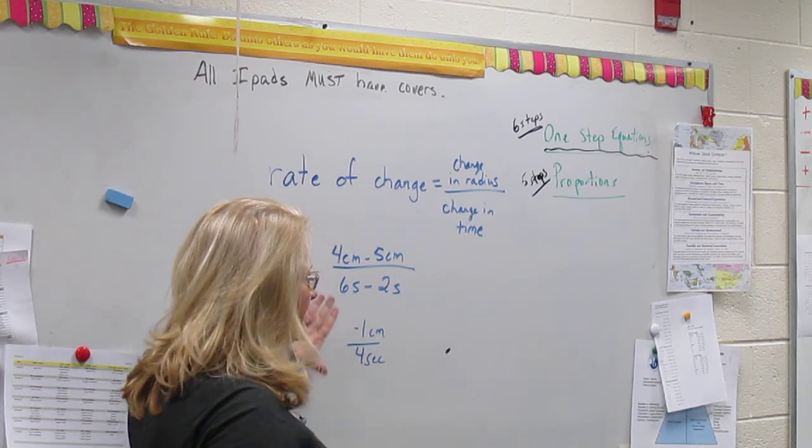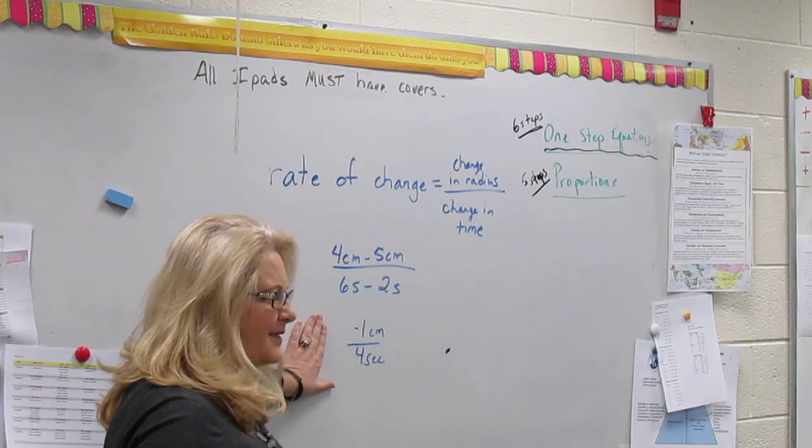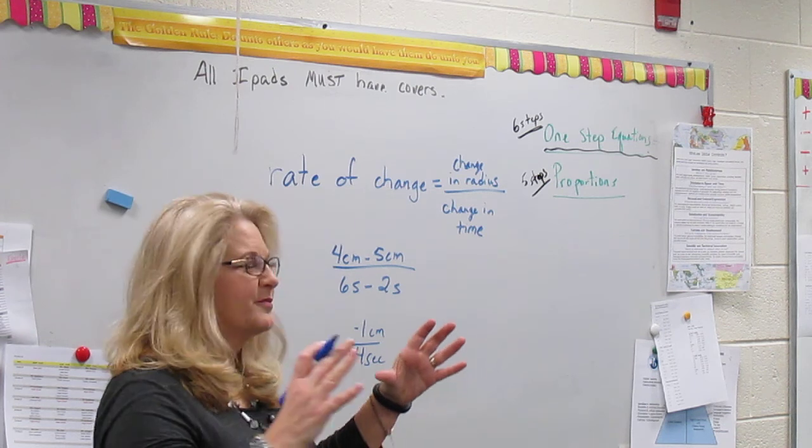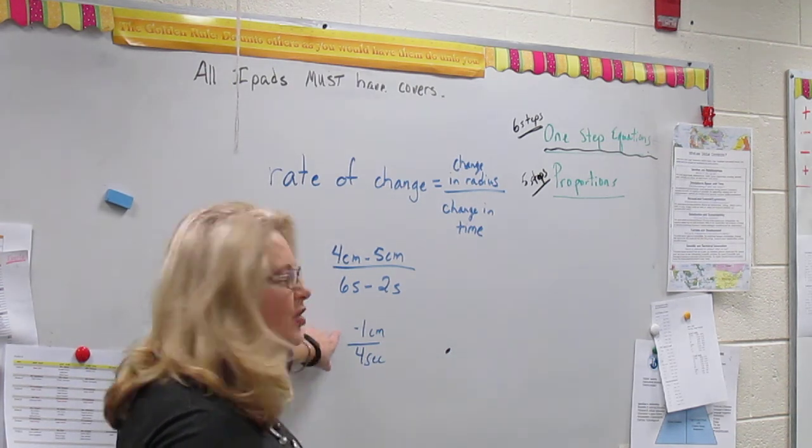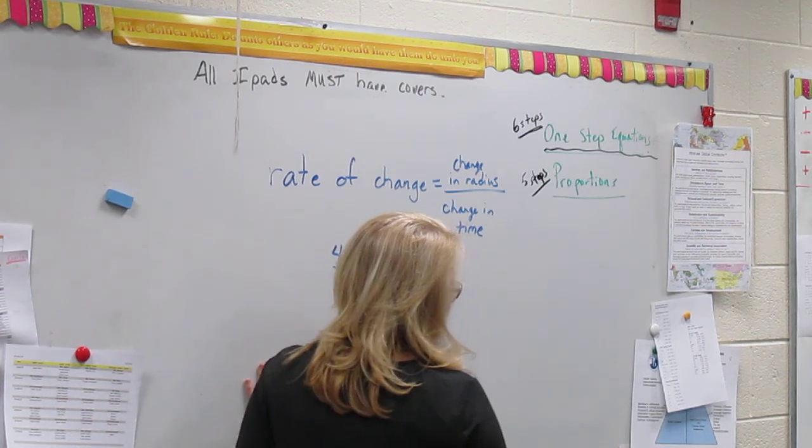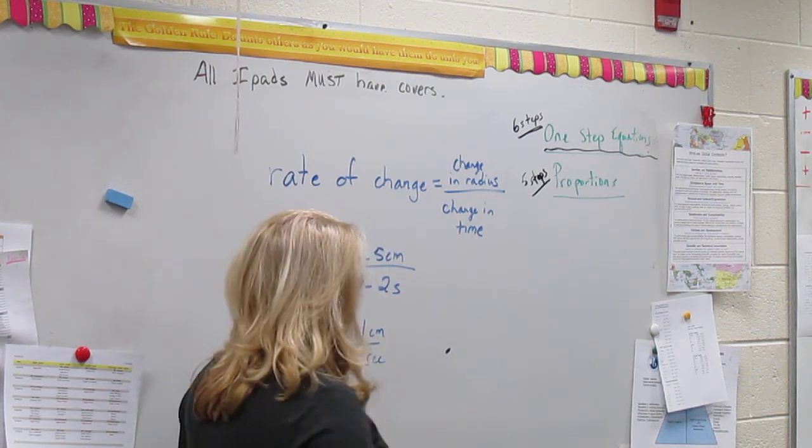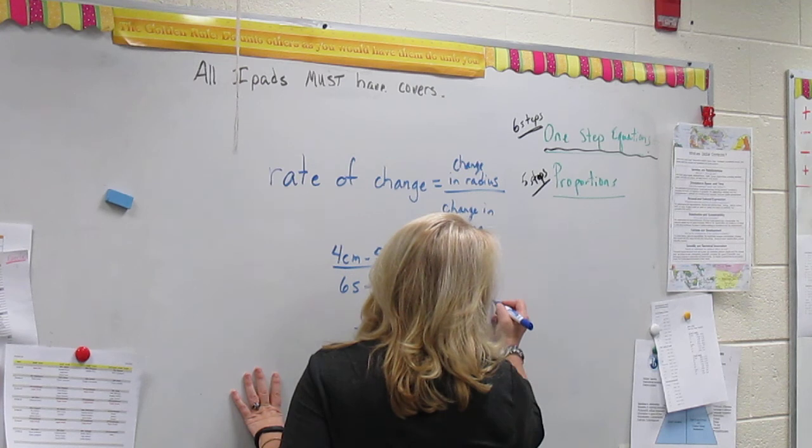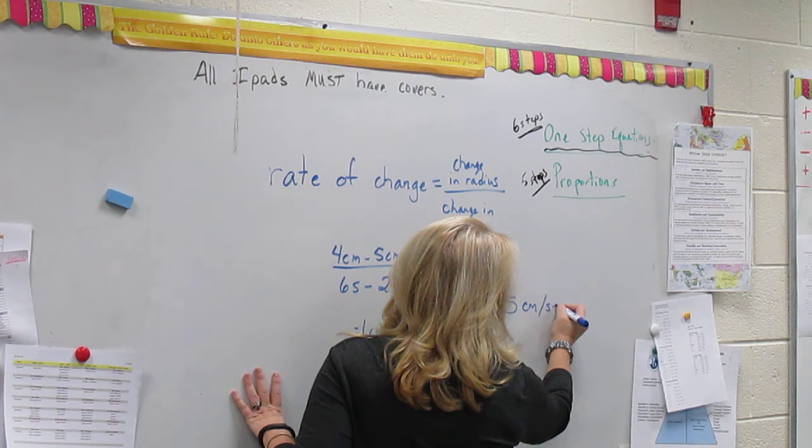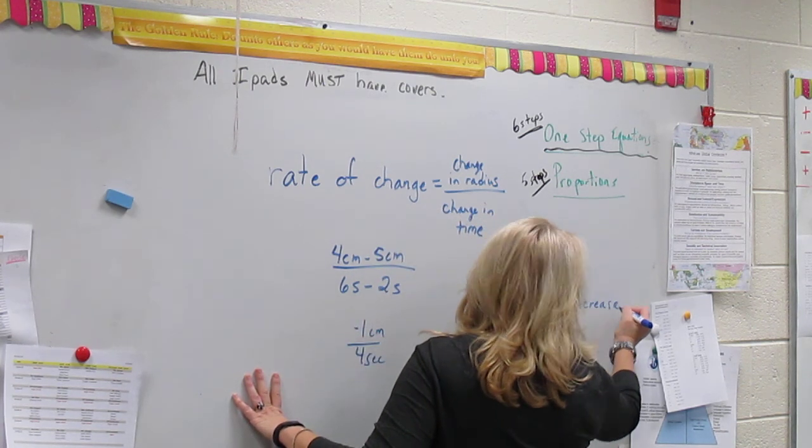So how much change in distance, or in diameter? 4 minus 5, what do you think? 1, that's the change, so it's actually going to be negative 1 centimeter of change, and then 6 minus 2 is going to be 4 seconds. So let's think about what does that negative 1 mean to us? What's happening? Is it getting smaller or bigger? Smaller. So the size of the circle is decreasing 1 centimeter every 4 seconds. Now, if we're going to simplify that into a decimal, you would take 1 divided by 4 and get 0.25. So 0.25 centimeters per second, and that's a decrease.